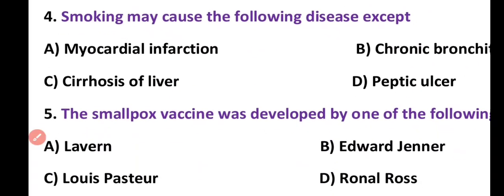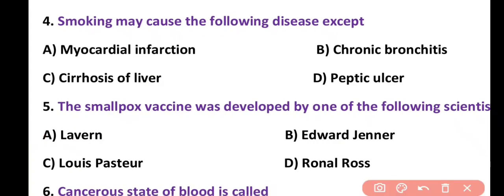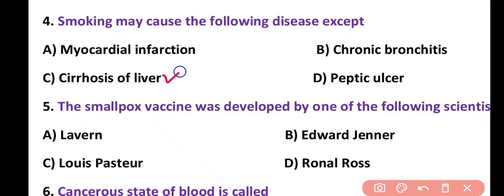Question 4. Smoking may cause the following diseases except: myocardial infarction, chronic bronchitis, cirrhosis of liver, or peptic ulcer. Correct answer is option C. Cirrhosis of liver is not caused by smoking; rather it is caused by a viral infection or consuming too much alcohol. The rest — myocardial infarction, chronic bronchitis, and peptic ulcers — are diseases caused by smoking.